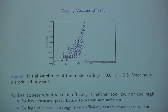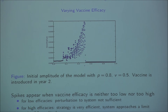We kept the vaccination rates constant — vaccinating 80% of newborns and the rest of the population at a rate of 0.5 per year — and introduced the vaccine in year 1, then varied vaccine efficacy from 0% to 100%. For low efficacy, perturbation to the system is insufficient and no spike appears. For higher efficacy, the strategy becomes very important, and the fraction of infection curve after vaccine introduction approaches a limit cycle of zero — the disease gets eradicated. So if vaccine efficacy and vaccination rates are both high enough, we can eliminate the disease.